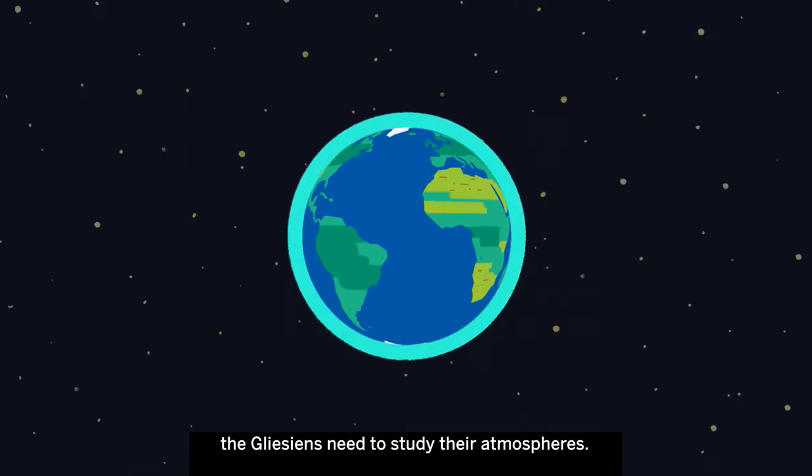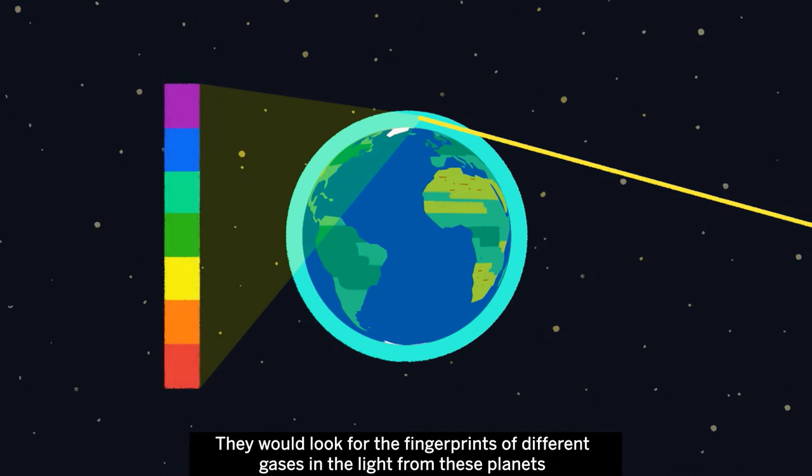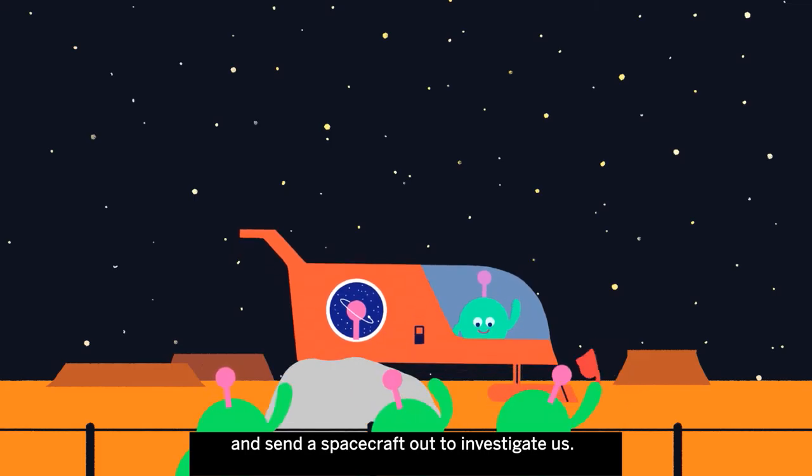To find out if one of these planets has life, the Glieseans need to study their atmospheres. They would look for the fingerprints of different gases in the light from these planets and send a spacecraft out to investigate us.